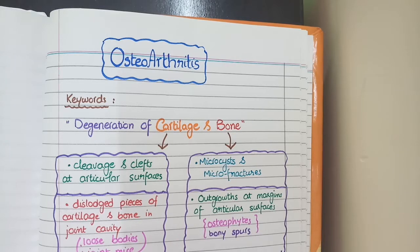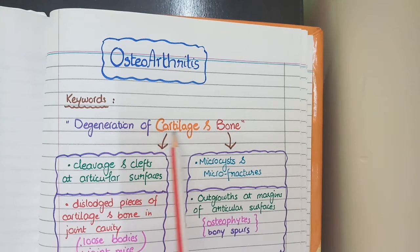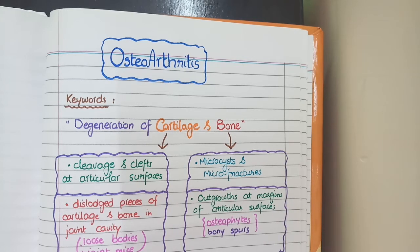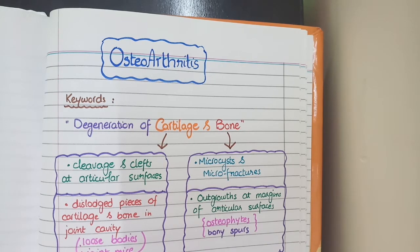Now let's come to the morphological features of osteoarthritis. Osteoarthritis means degeneration of cartilage and bone at the level of joints. But this degeneration differs from that of rheumatoid arthritis in that it usually does not involve the immune system or inflammatory cells, and it is not characterized by proliferation of synovial cells and synovial matrix. So you usually don't see any PANAS.